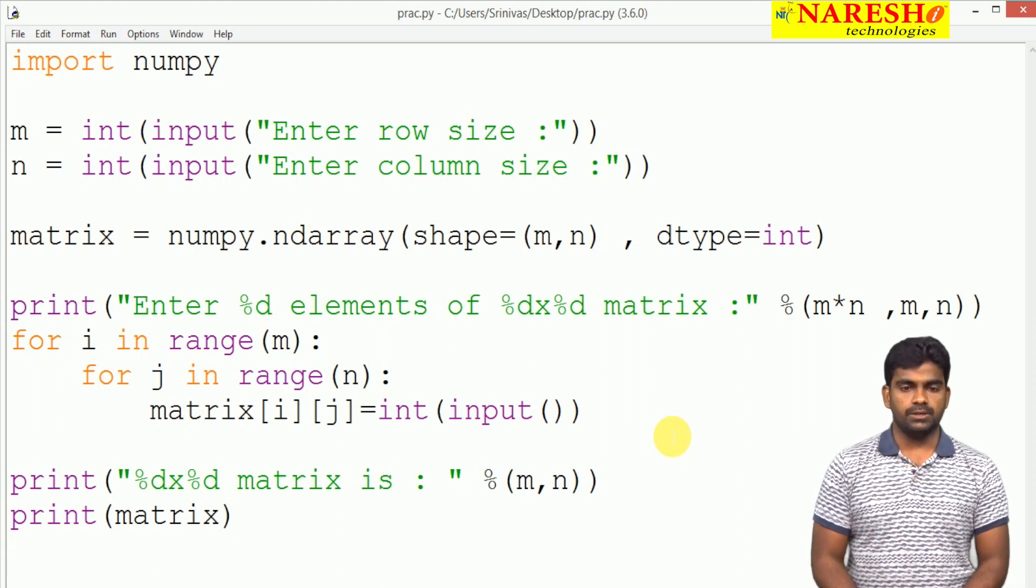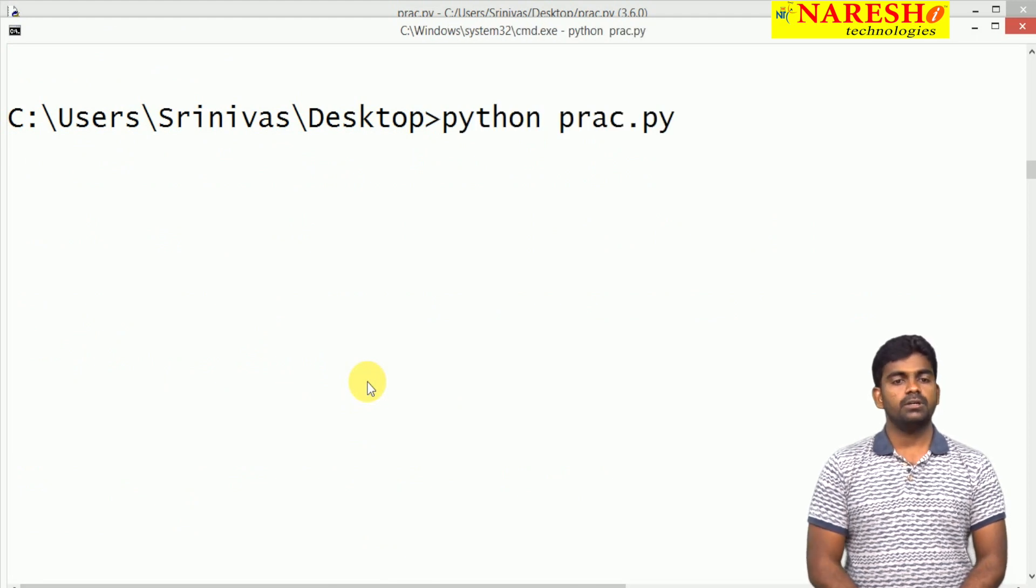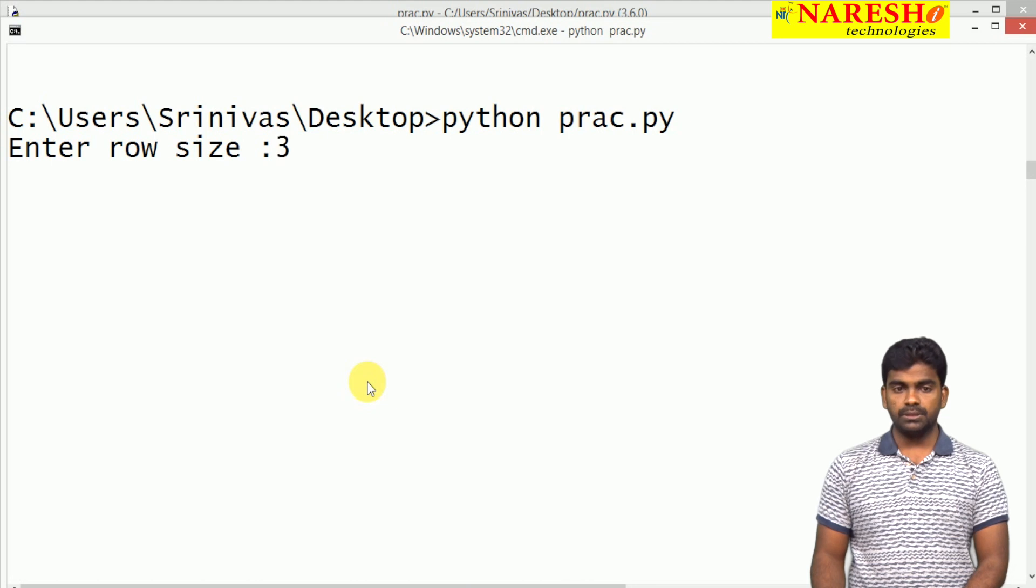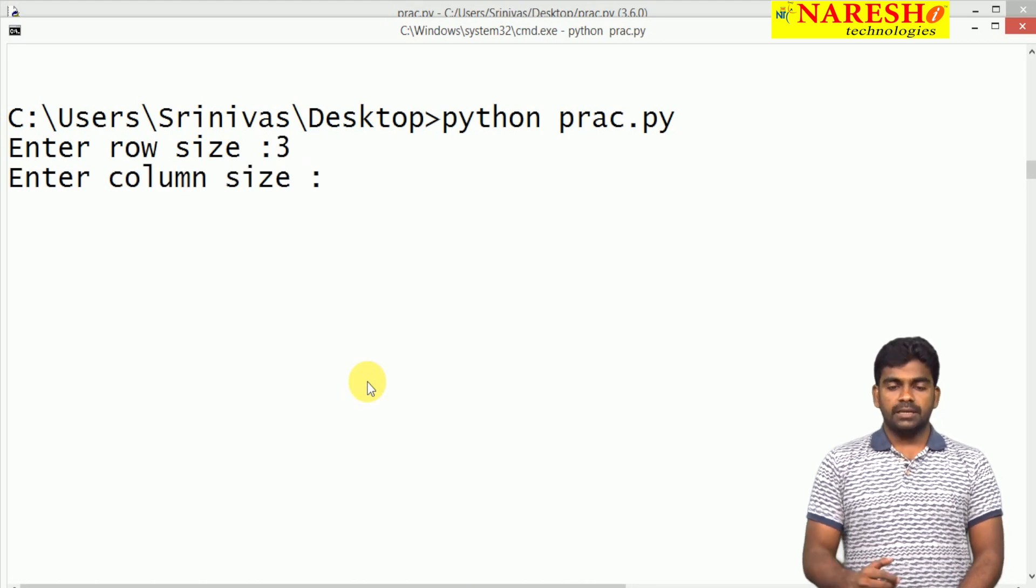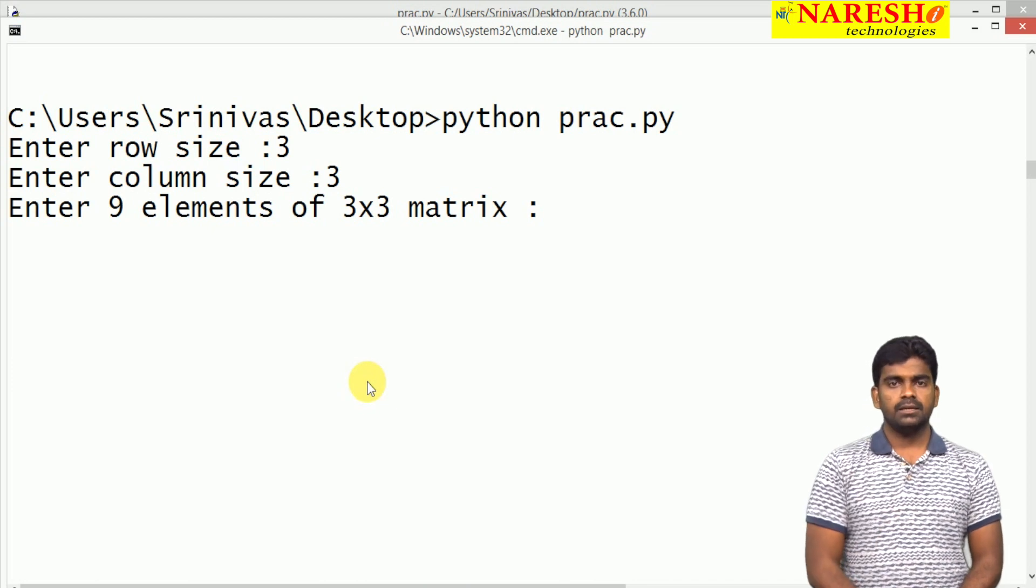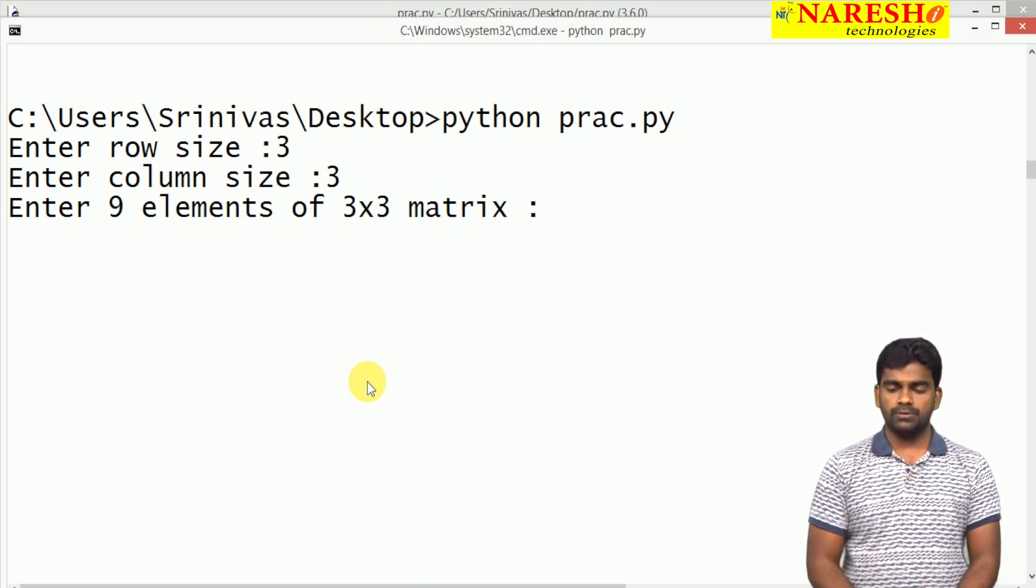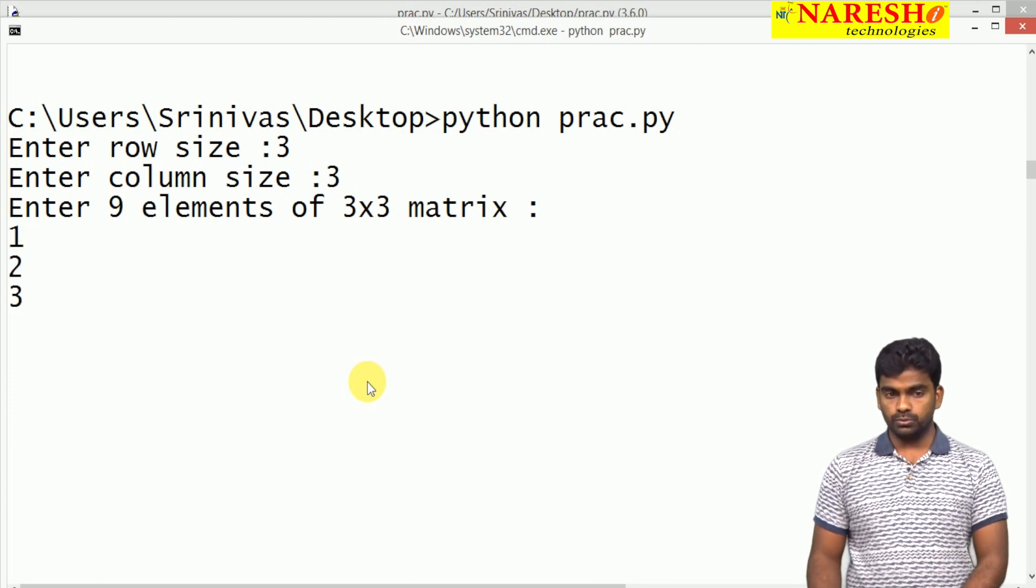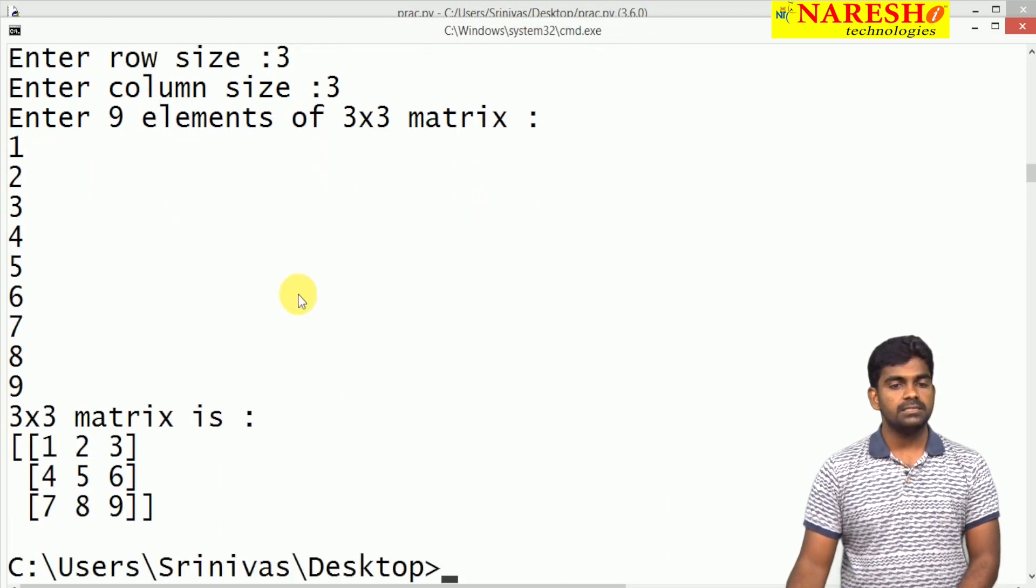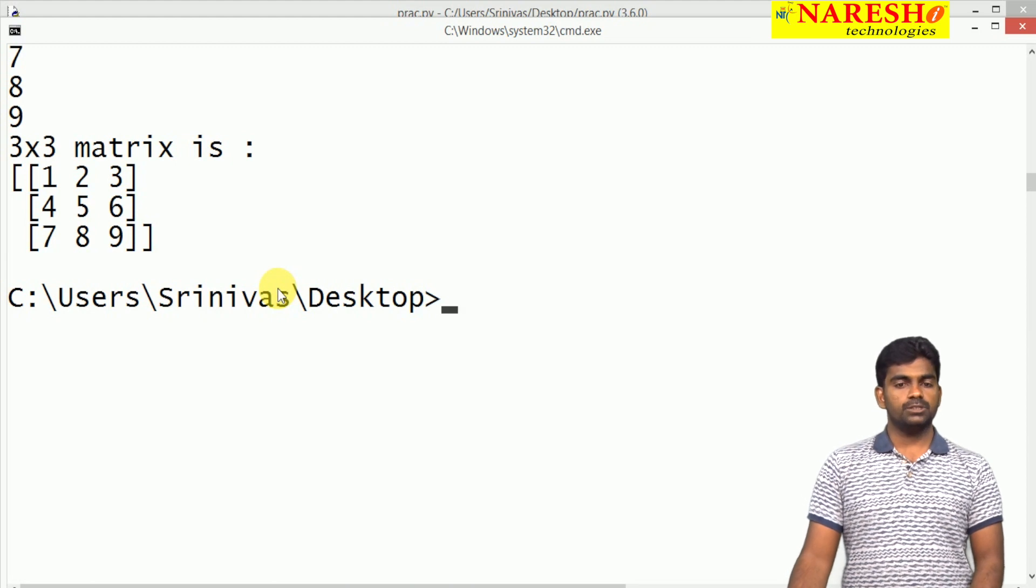How does this program get executed? Suppose whenever we execute, it is expecting what is the row size. For example, 3 rows. Here column size, 3. So clearly it is saying enter 9 elements of 3 by 3 matrix. Then we are giving 1, 2, 3, 4, 5, 6, 7, 8, 9. Look at this: the 3 by 3 matrix is showing all the elements.